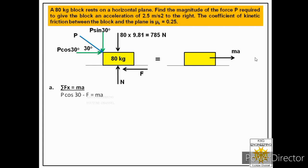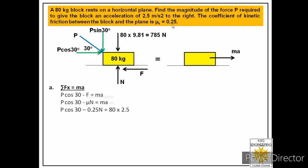Replacing the frictional force with μN, the equation becomes P cos 30° − μN = ma. Substituting μk = 0.25 and a = 2.5 m/s² with mass m = 80 kg, the right-hand side equals 200. So the equation reduces to P cos 30° − 0.25N = 200. Since this has two unknowns, P and N, we call this equation number one and must find a second equation.